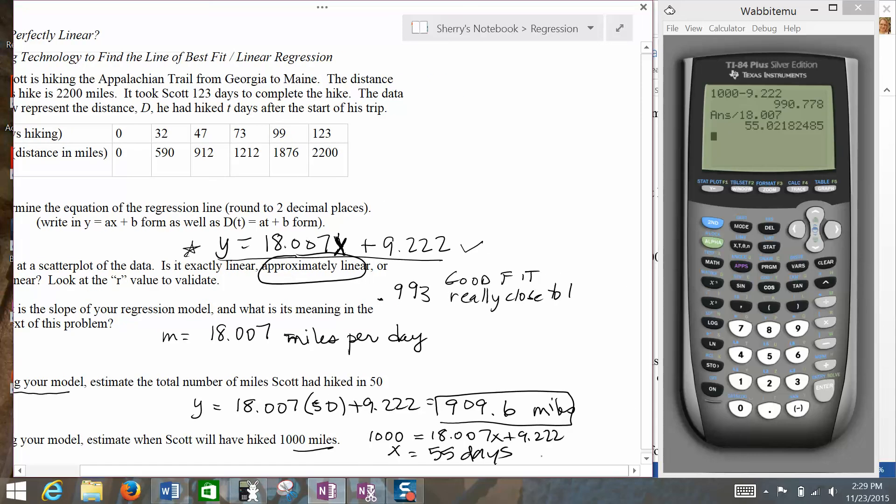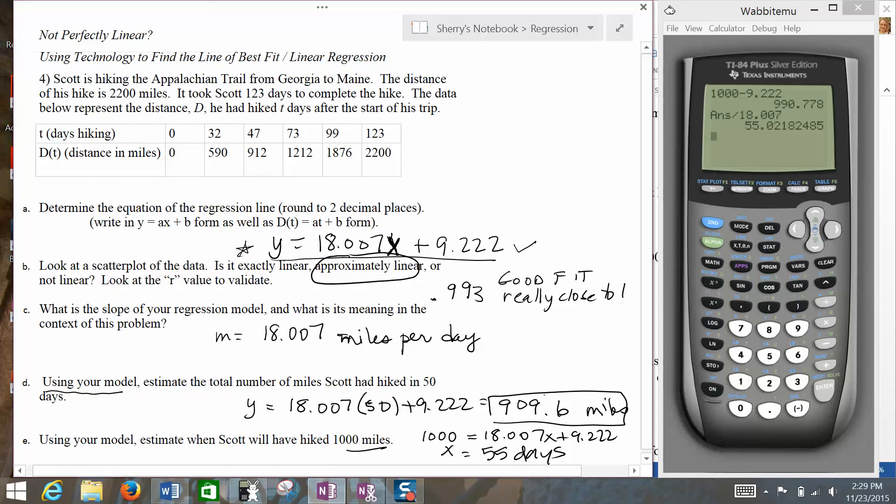And that should correlate pretty well with what we were talking about here, right? He did 909 miles in 50 days, so we'd be up close to 1,000 miles by 55 days, going about 18 miles per day. So anyway, that's the way that we can use our calculator in order to figure out a linear regression equation. And most of all this fun stuff all hides in the stat menu right there. Hope that helped.